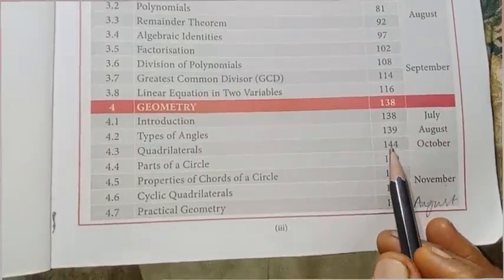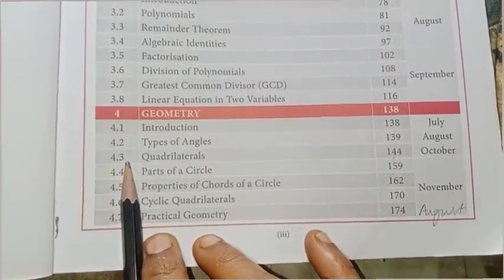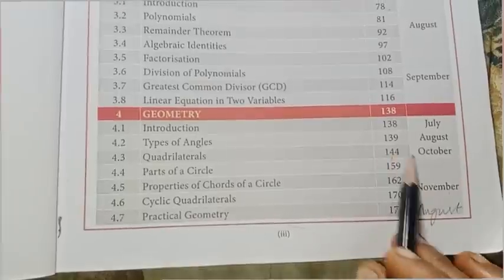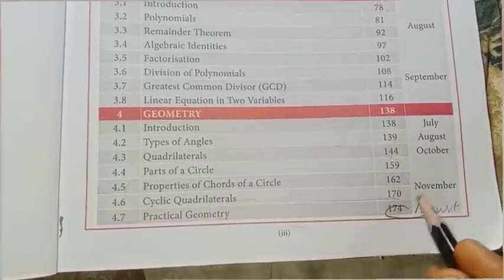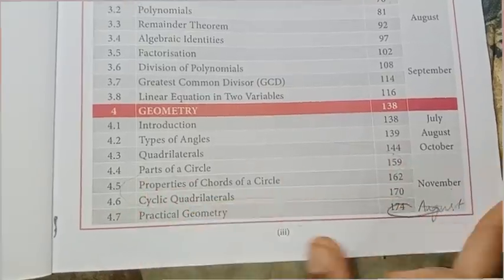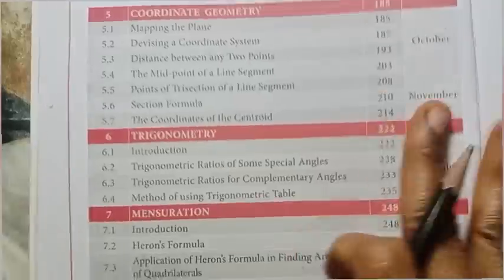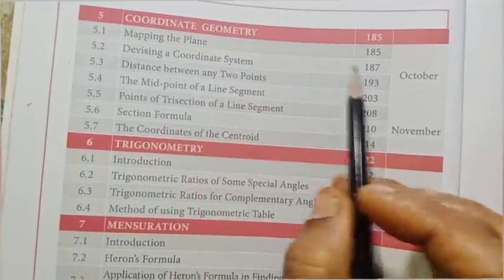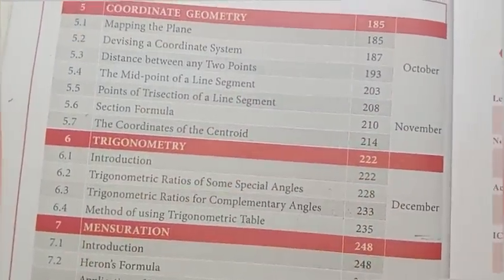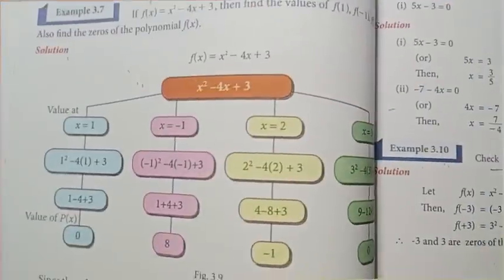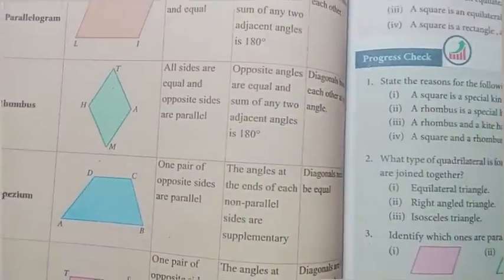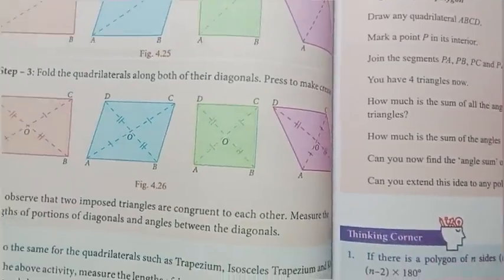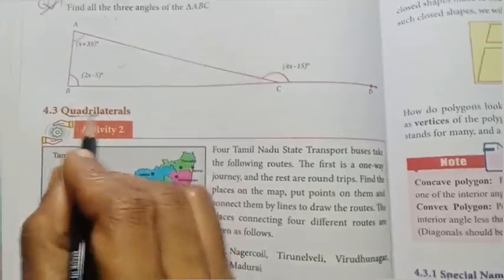You can do the parts of 4.3 quadrilateral parts and parts of a circle from November 1st. We have practical geometry. We also have to do 4.4 quadrilateral parts and coordinate geometry — that is the fifth chapter, page number 144. You can start the quadrilateral parts, working out daily exercise-wise.